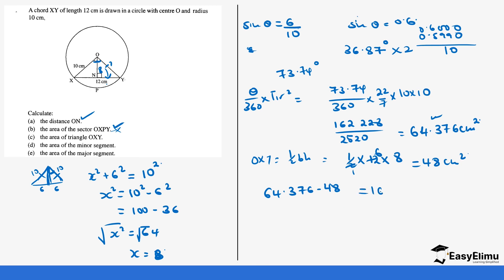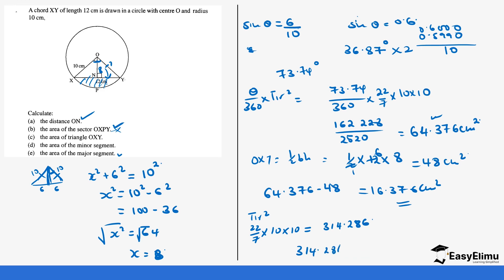Finally, for the major segment: take the area of the circle minus the area of the minor segment. Area of circle equals pi r squared equals 22 over 7 times 10 times 10 equals 2,200 divided by 7 equals 314.286 centimeters squared. Then 314.286 minus 16.376 gives us 297.91 centimeters squared.